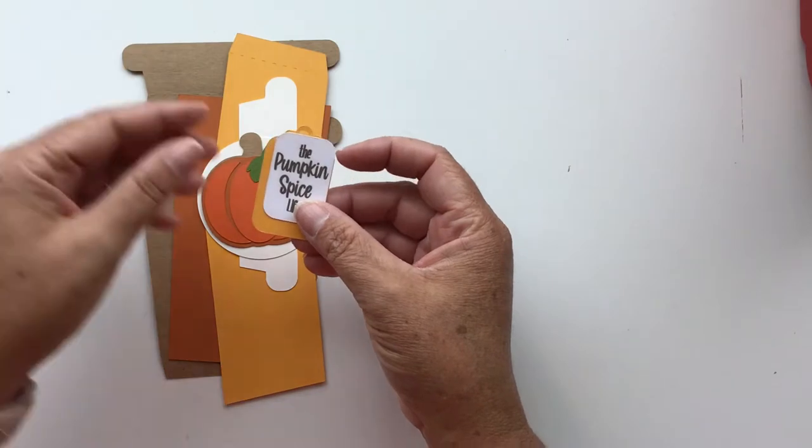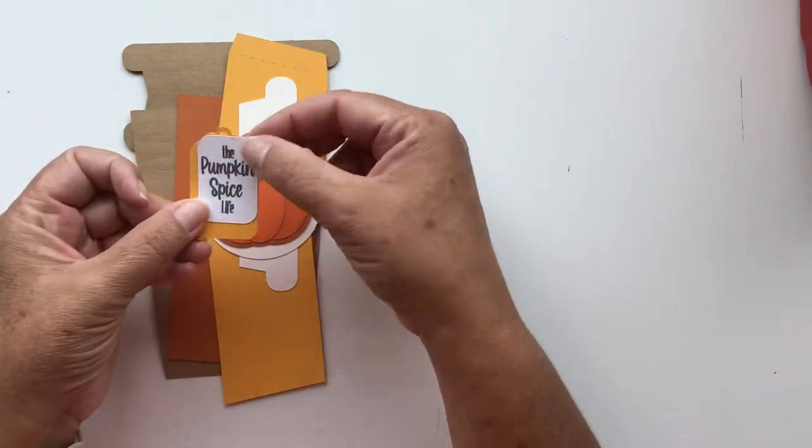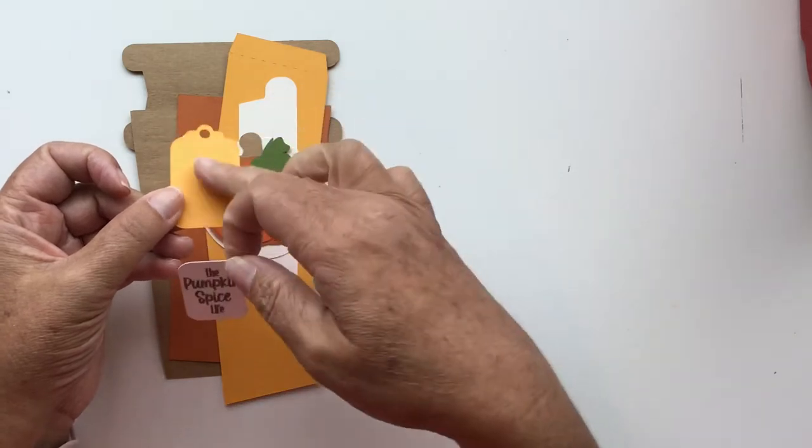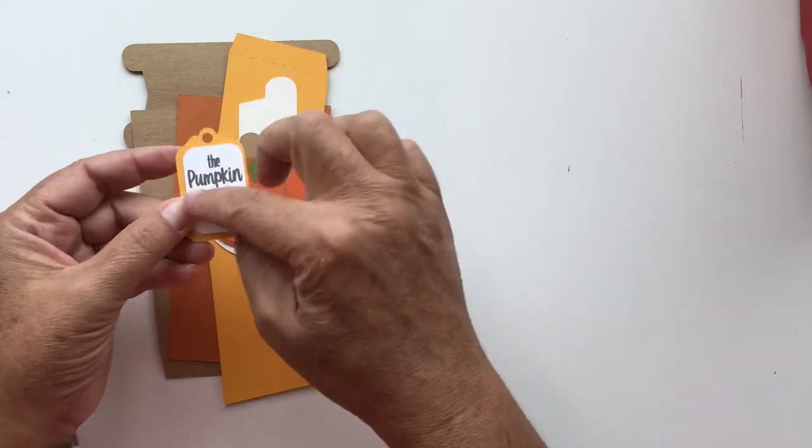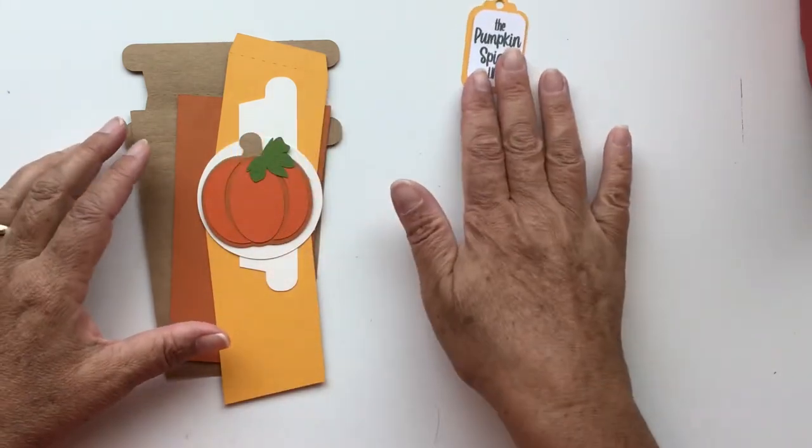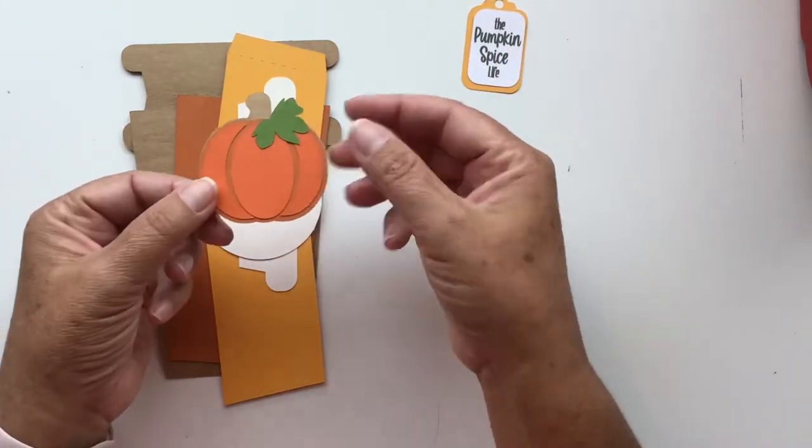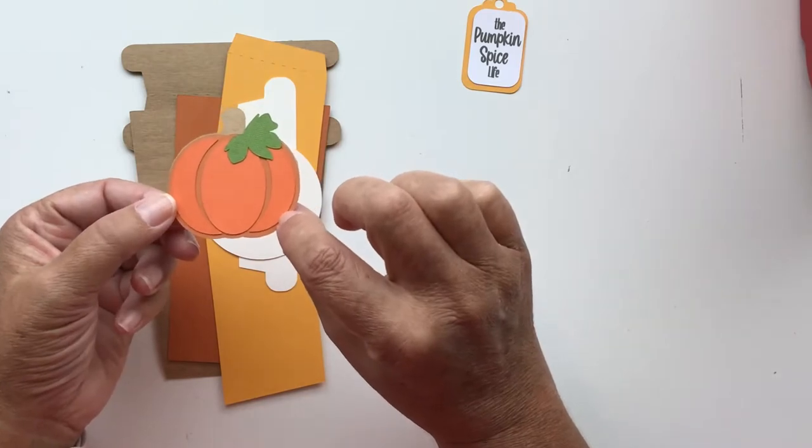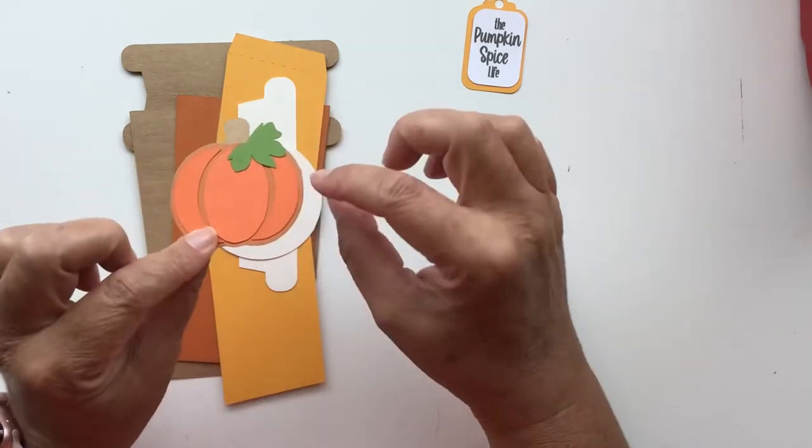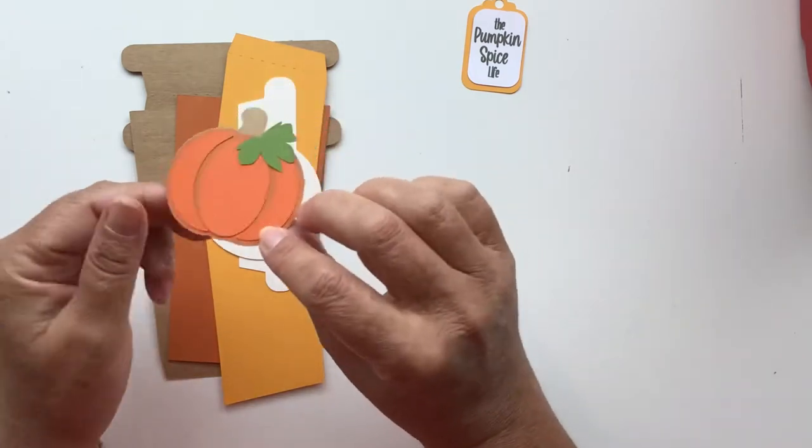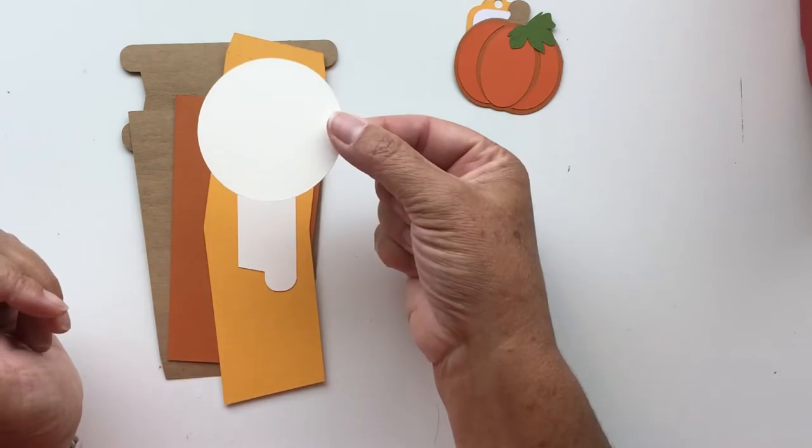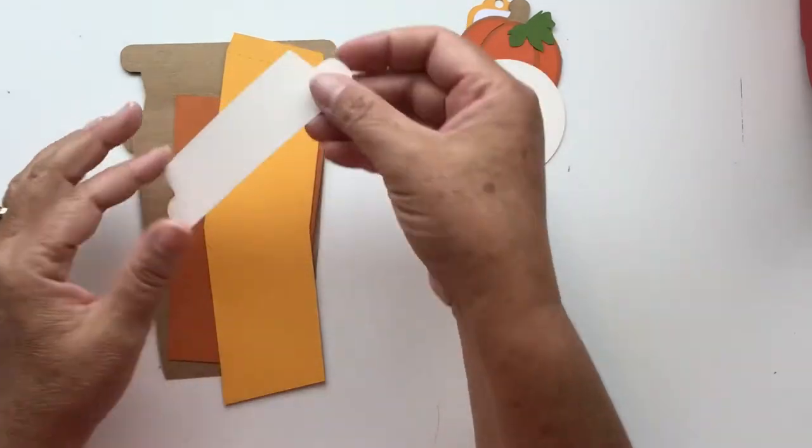In your file you'll get the printable tag that says The Pumpkin Spice Life. It also comes with a blank tag if you want to hand write or stamp something. It has your layered pumpkin, I've already assembled that one. There are four layers on it, then the decorative circle, the cup lid, the cup sleeve, the gift card holder, and the card comes in two pieces.